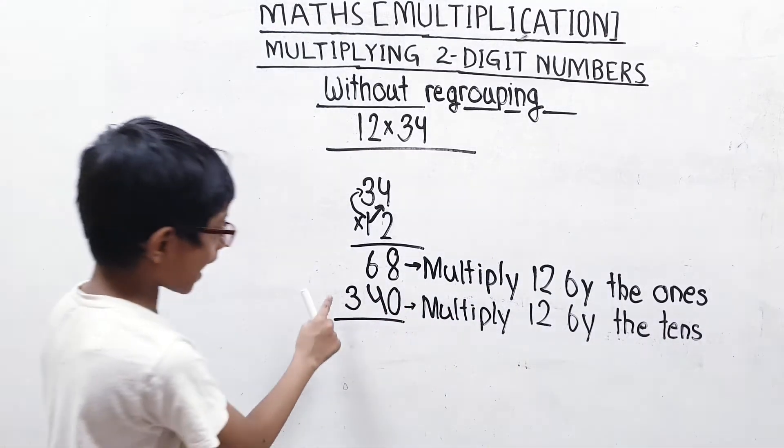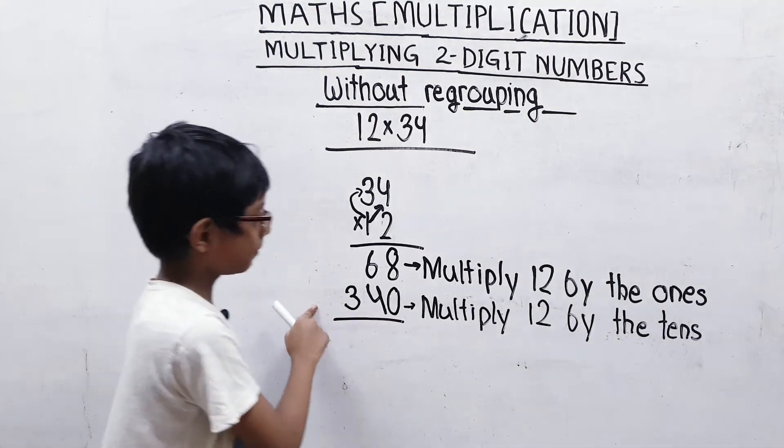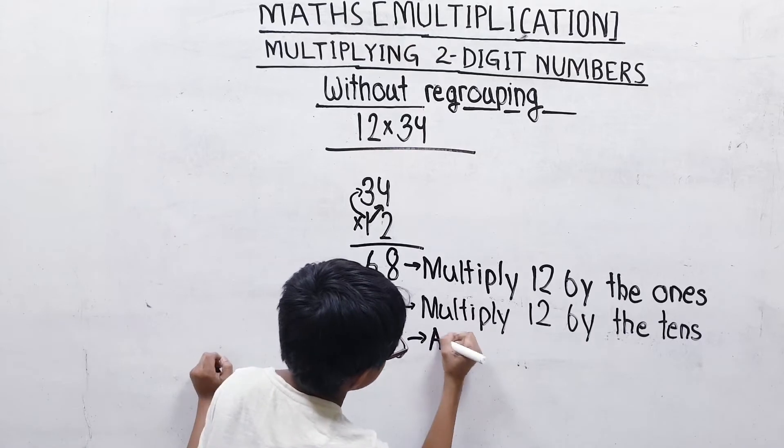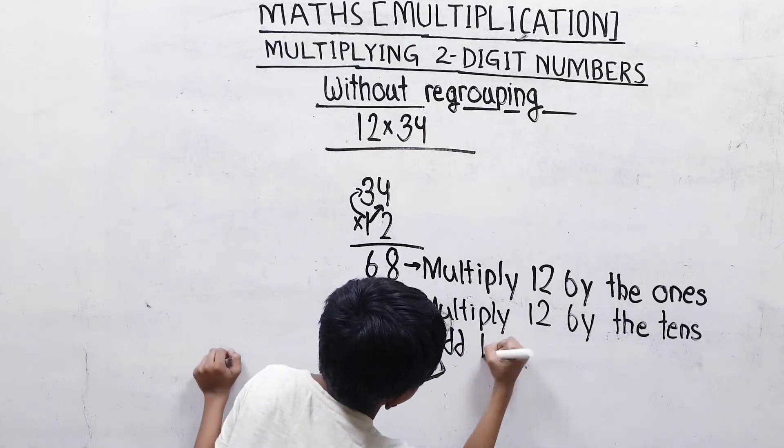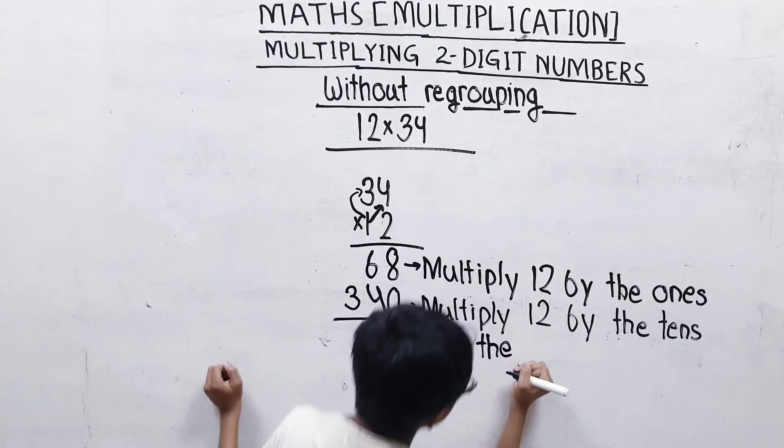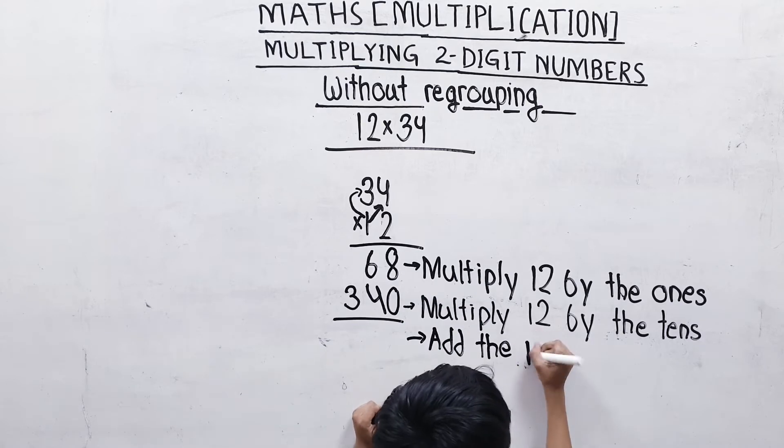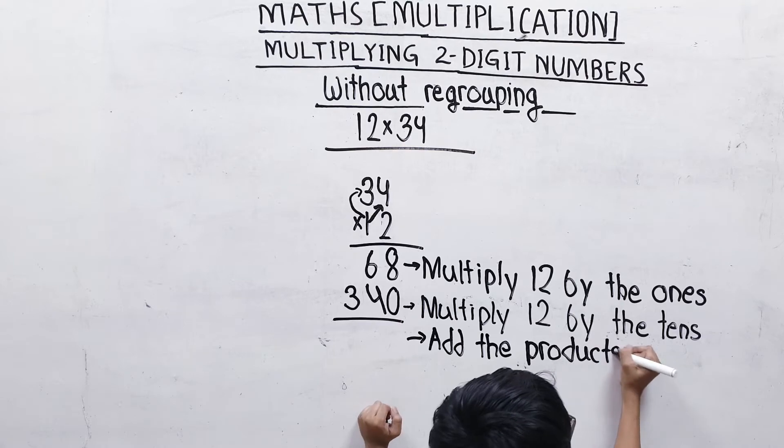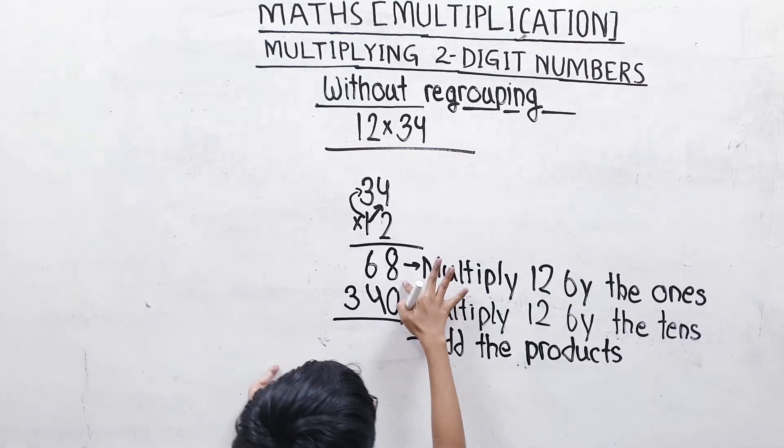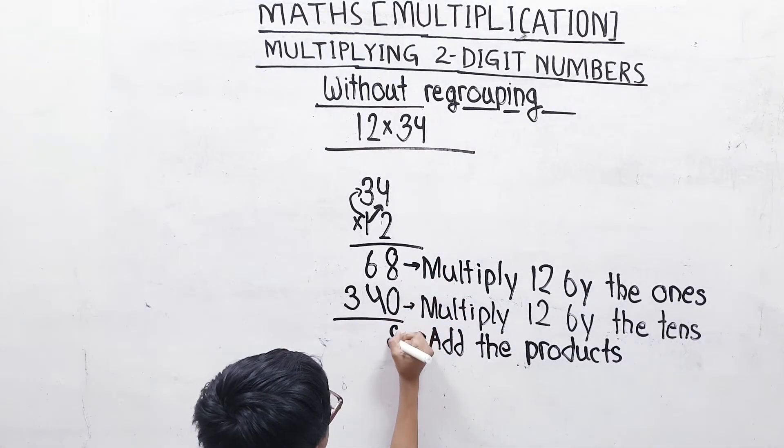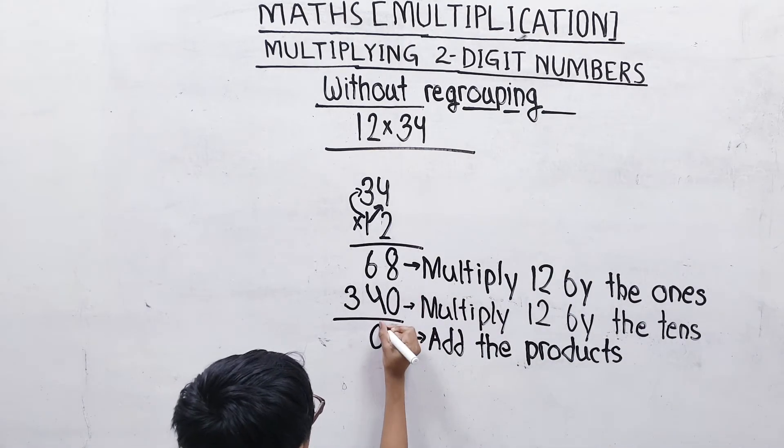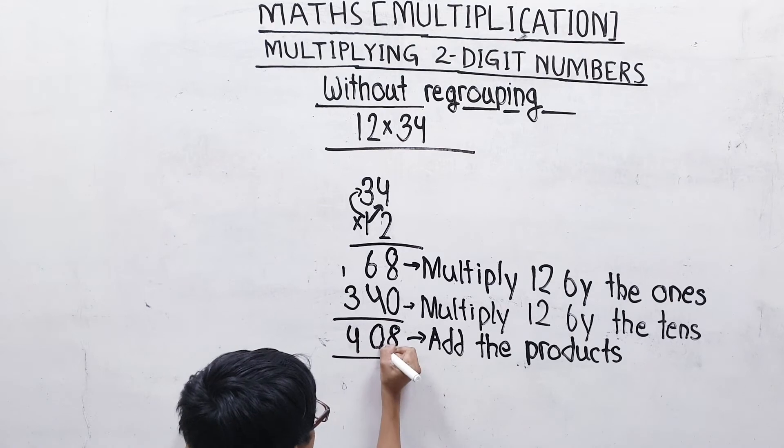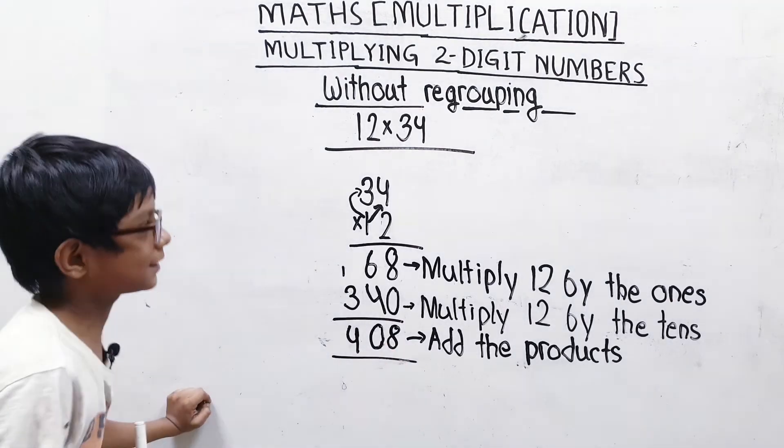Now we will add it. Add the products. 8 plus 0 is equal to 8. 6 plus 4 is 10, write 0, carry 1. 3 plus 1 is 4. The answer is 408. We have done it like this.